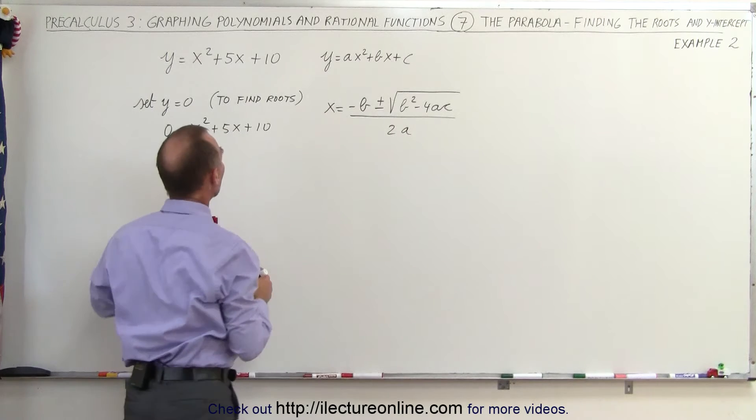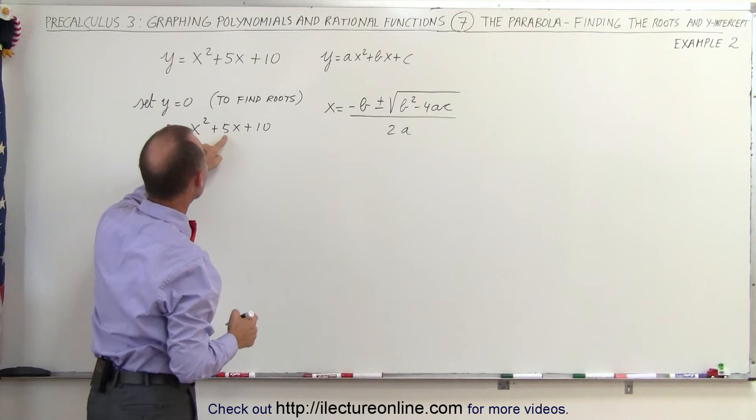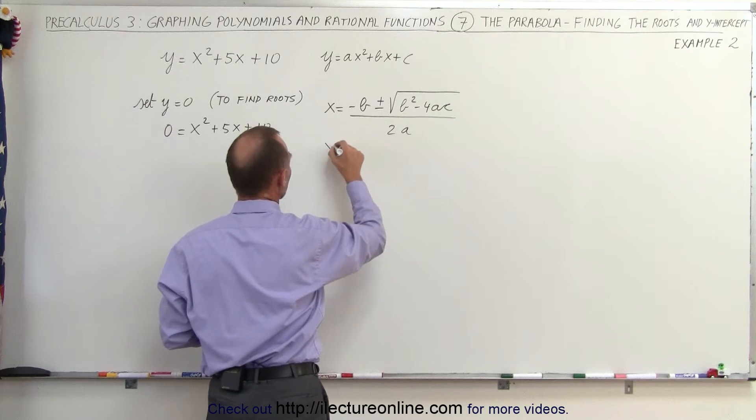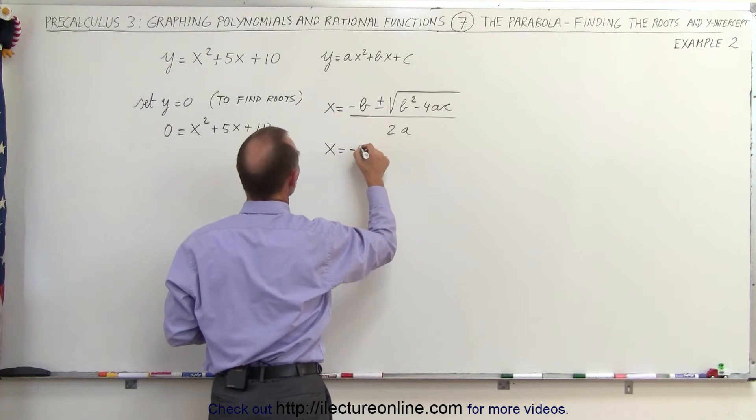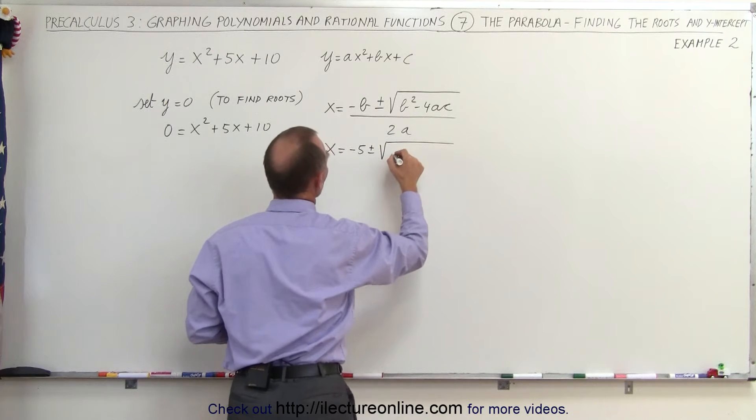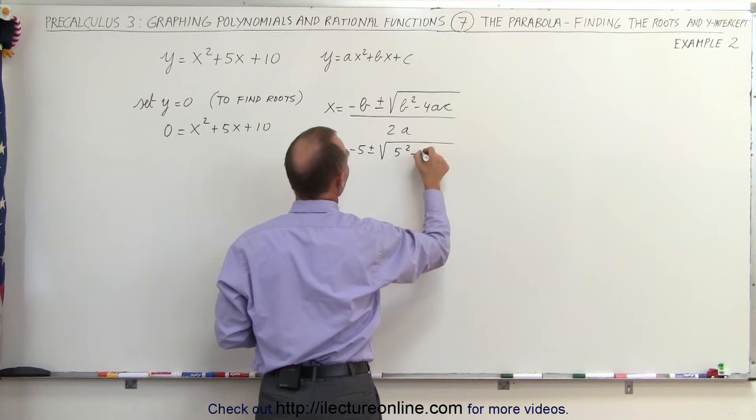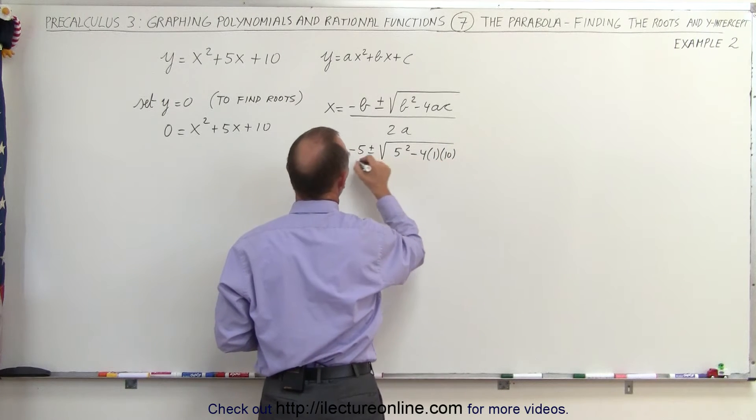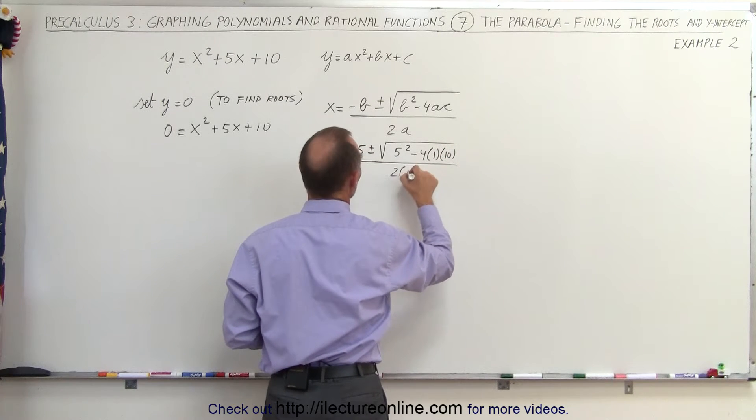So when we plug in those numbers, we know that a is 1, b is 5 and c is 10. So x is going to be equal to minus b, that would be minus 5, plus or minus the square root of b squared, which is 5 squared, minus 4 times a, which is 1, times c, which is 10, all divided by 2a, which is 2 times 1.